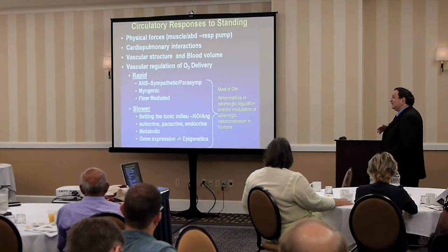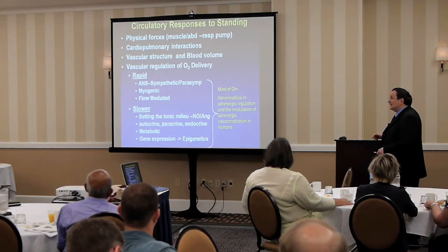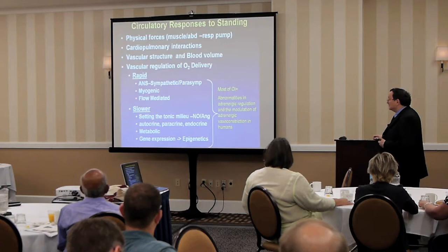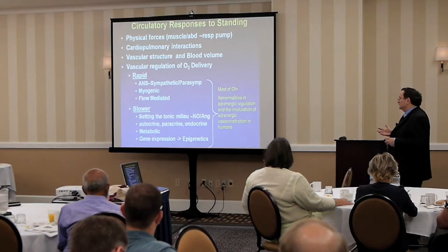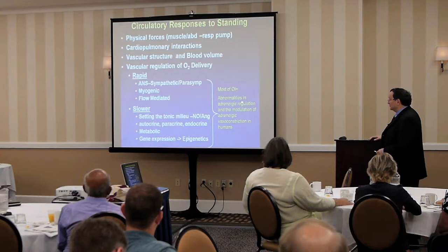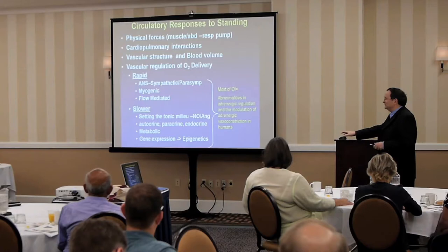How can this affect the way we respond to being orthostatic? They set up a tonic background. For example, nitric oxide and angiotensin II are very potent regulators of the autonomic nervous system but change more slowly. Yet if angiotensin is present in great amount circulating or in the brain, it has profound effects on sympathetic activation. Most of OI therefore constitutes abnormalities of adrenergic regulation and in the modulation of adrenergic vasoconstriction.